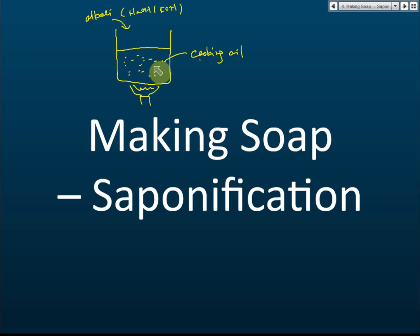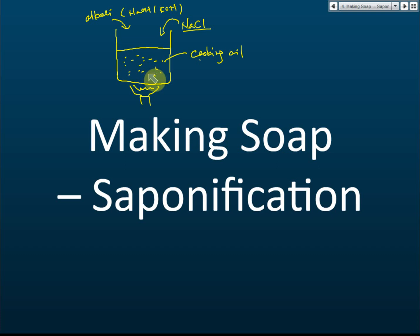If you don't want liquid soap and prefer solid soap, you add some sodium chloride — that is table salt, the salt you eat every day. Sodium chloride will reduce the solubility of the soap and cause it to become solid. Then you filter it and you will have solid soap. That's how easy it is to make soap.